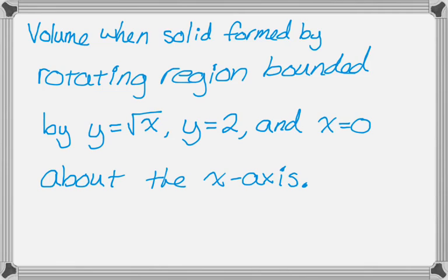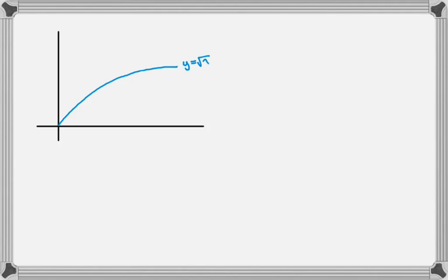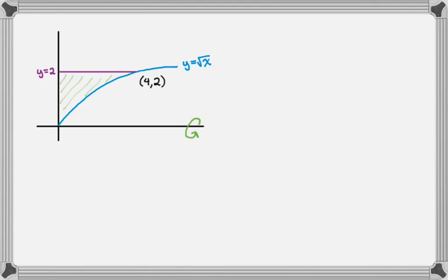The first thing you want to do is create a graph — you want it to be pretty accurate. You need to know intersection points and identify the region. The shaded region here is between y equals radical x, y equals 2, and the y-axis. I also show the axis I'm going to rotate around and find that point of intersection because I'll need it to establish the bounds.